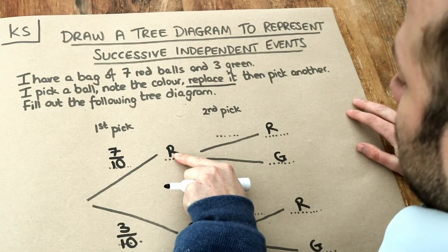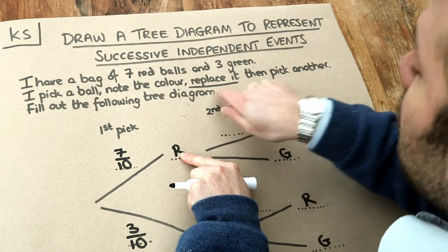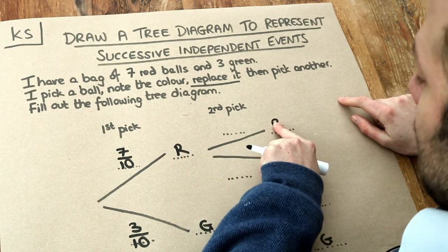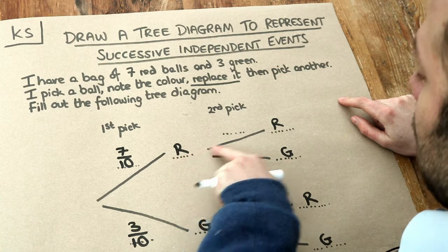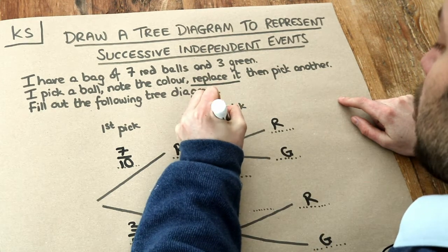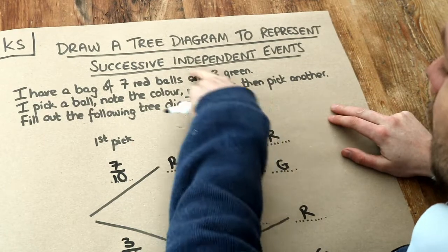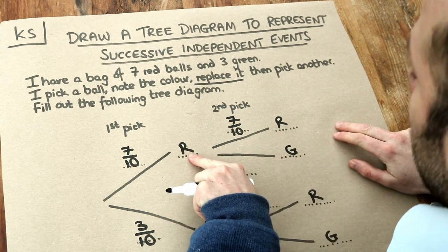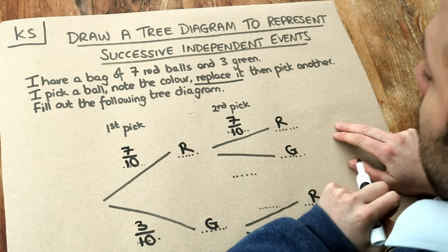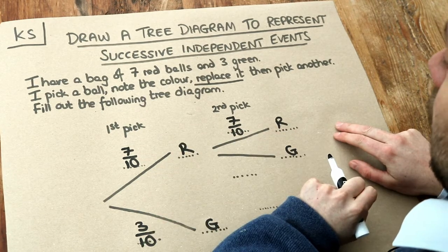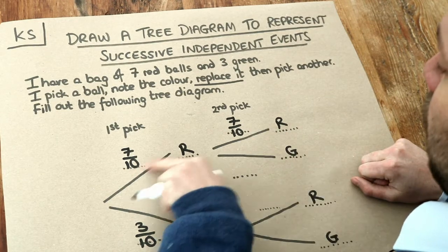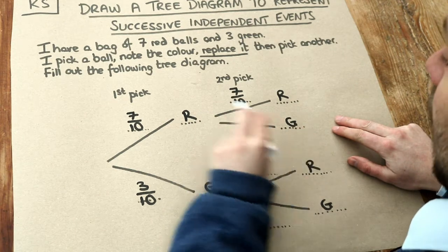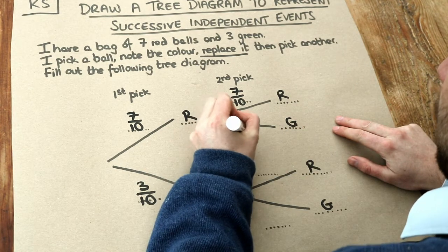Now if we've picked a red ball and put the ball back, there are still 7 red balls and 3 green balls in the bag. So the probability of then getting red on our second pick, if we'd picked red on the first pick, would still be 7 out of 10. It doesn't change, and that's why we say these two picks are independent. Independent just means they're not affected by each other — picking a red on the first pick doesn't make it any more or less likely to get red on the second pick. So these probabilities are the same. We'll deal with dependent events in a separate video where the probabilities do change. And getting a green on the second pick, given that we'd already had a red on the first pick, is still 3 tenths.